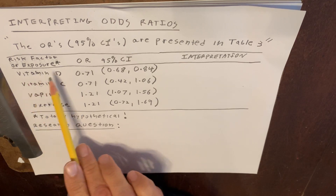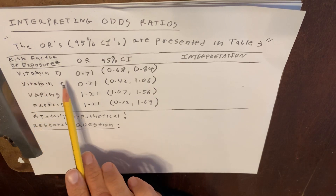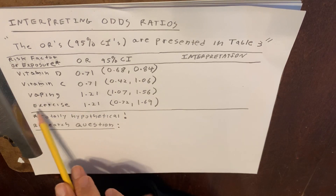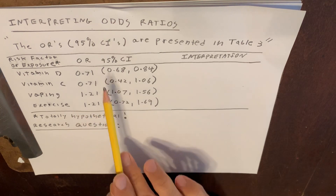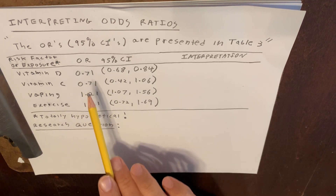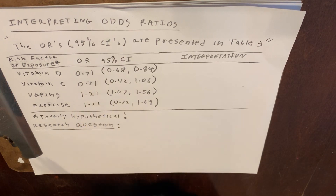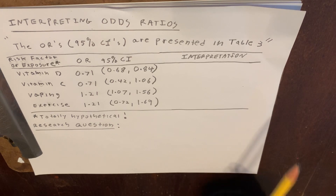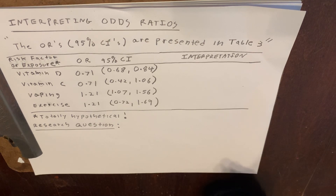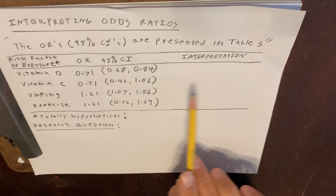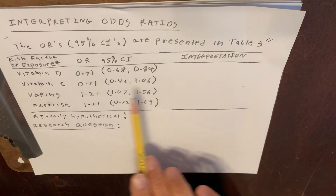So we have these hypothetical risk factors like vitamin D supplementation, vitamin C supplementation, vaping, and exercise. And then I gave you two different odds ratios. I want you to notice that one of the odds ratios is less than 1, and the other odds ratio is greater than 1. And here we have some 95% confidence intervals, and we're going to see if we can learn how to interpret these.